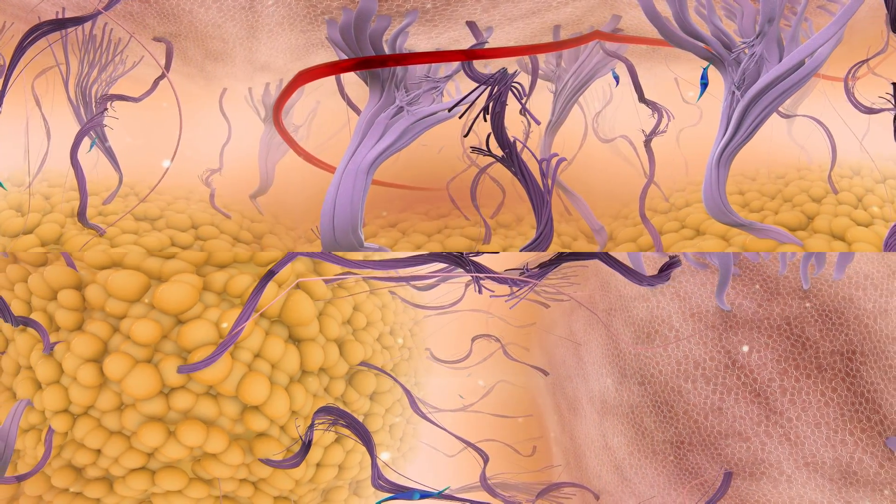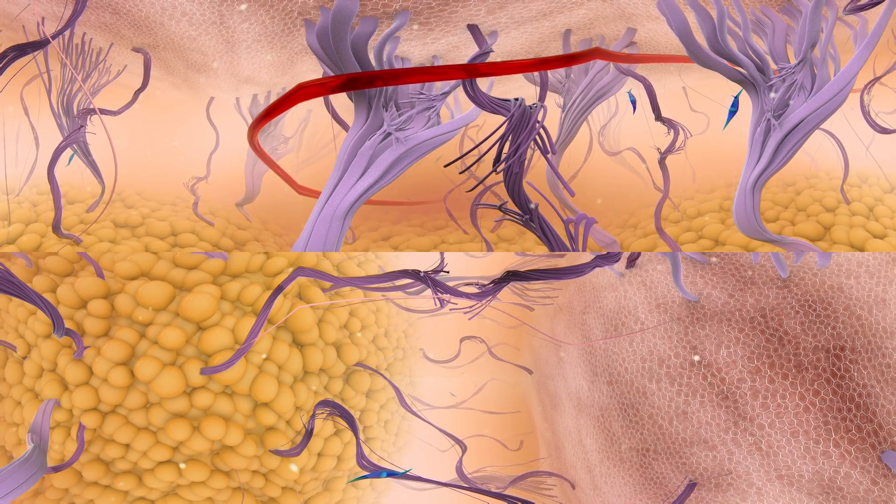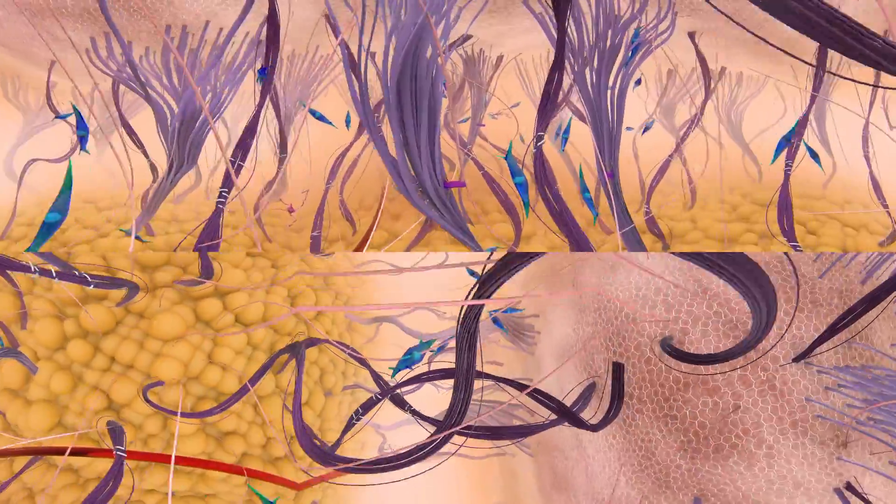As your skin ages, the level of hyaluronic acid decreases and the collagen and elastic fibers become damaged. Skin loses its internal architecture, which can be seen at its surface.